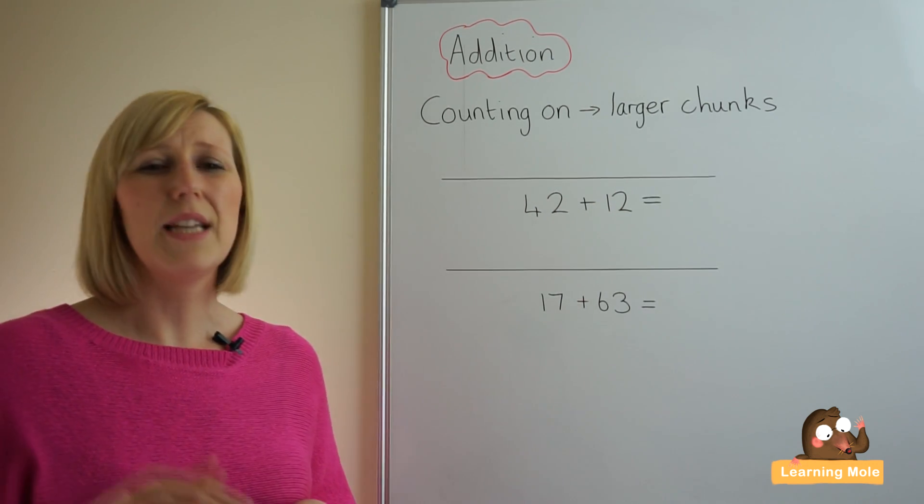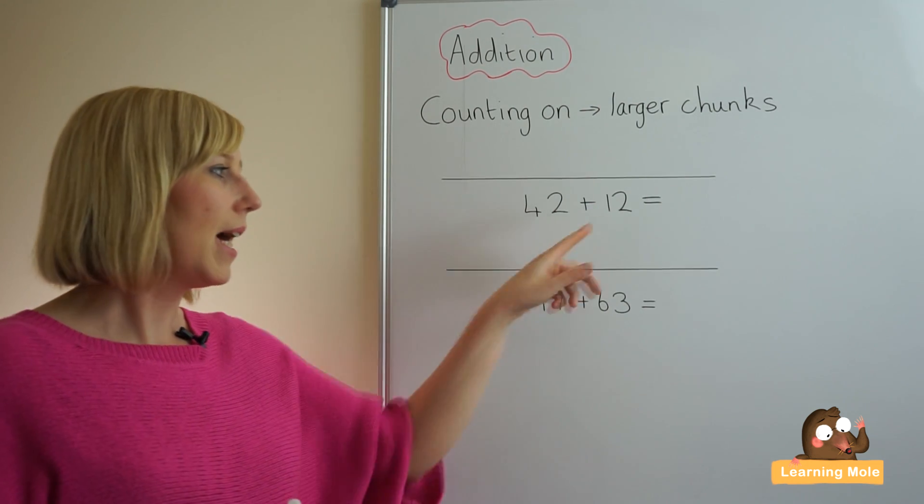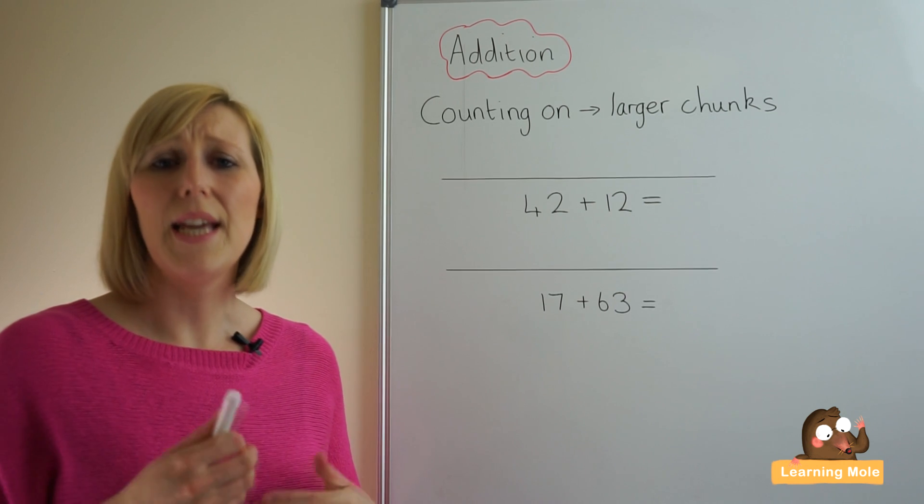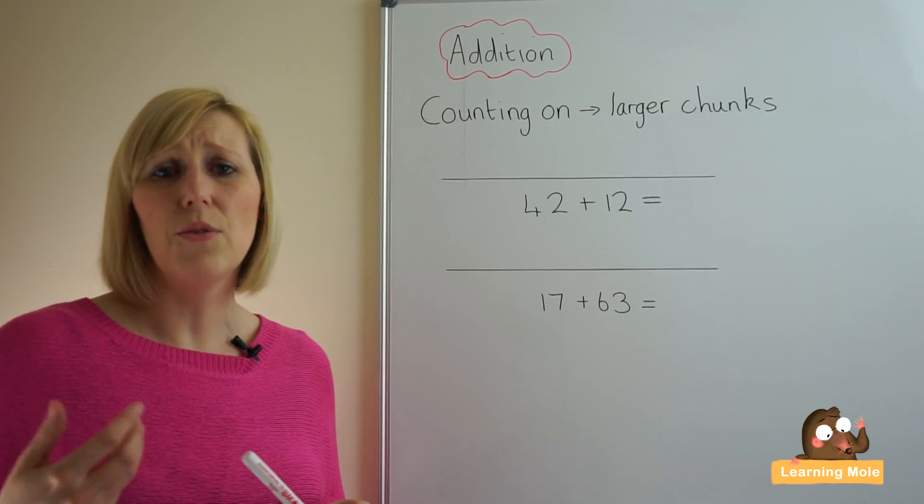The idea of using the larger chunks is just to cut out those steps. Because obviously if you're going to add 12 onto 42, yes you're going to reorder the number sentence and put 42 first, then you're going to count on 12.